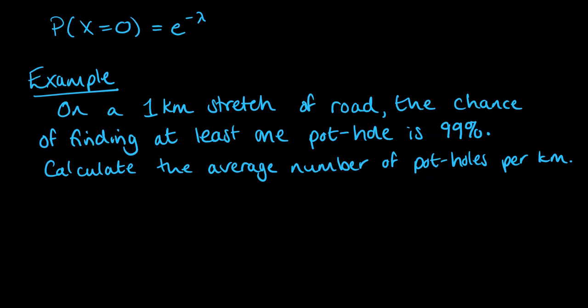If the chance of at least one pothole is 99%, then we can work out the probability of there being no potholes as being 1%, or 0.01, because remember we need to get down to this x equals 0 probability to be able to use our formula.